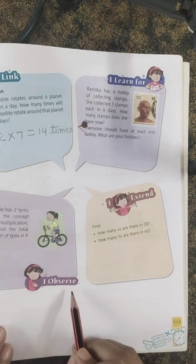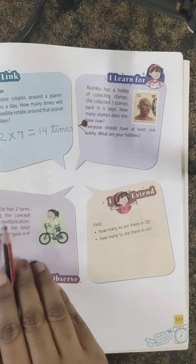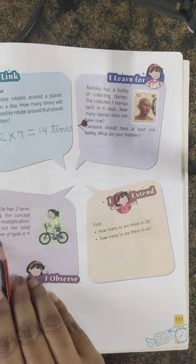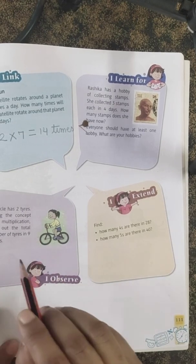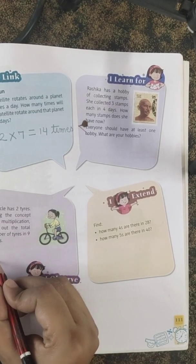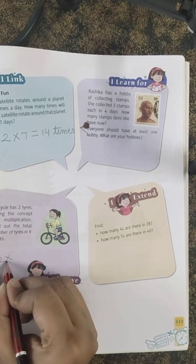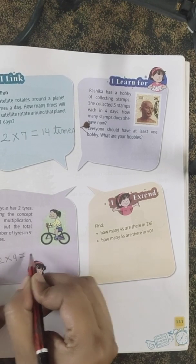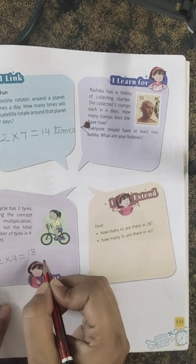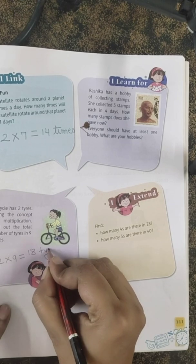Next question: A bicycle has two tires. Using multiplication, find the total number of tires in nine bicycles. We just did this with a tricycle, and now we are doing it with a bicycle. 2 × 9 = 18 tires.